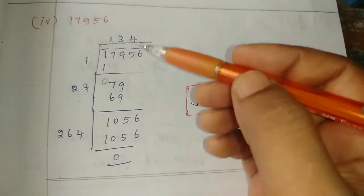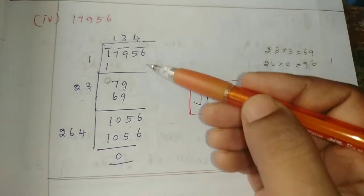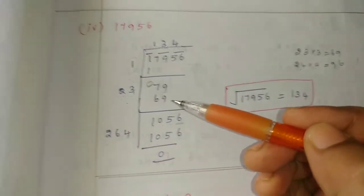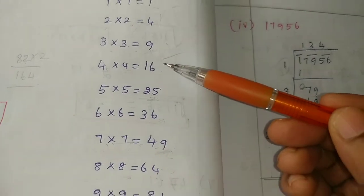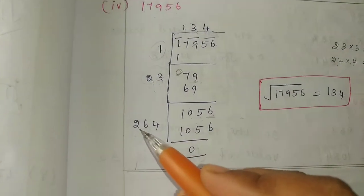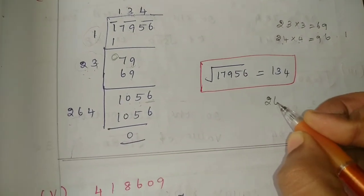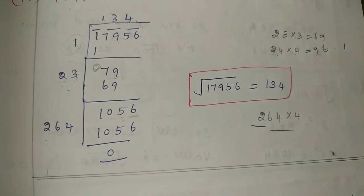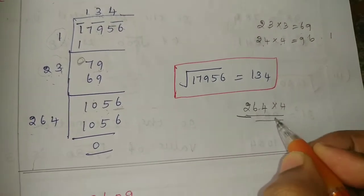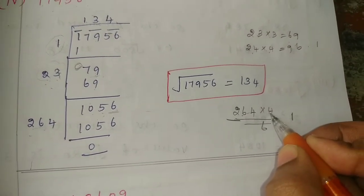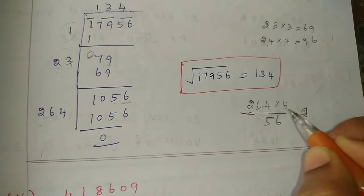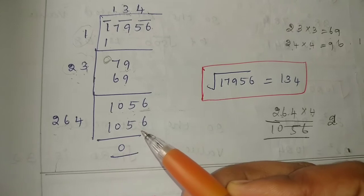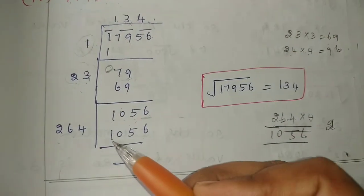Now what do you do? Add the step. Next set of values is 56. So there is 1056. Last value is 6. So this is 4. 4 times 4 is 16, 6 is 1. 6 times 4 is 24, 24 plus 1 is 25. 5. 2 times 4 is 8, 8 plus 2 is 10. So the answer is 1056.